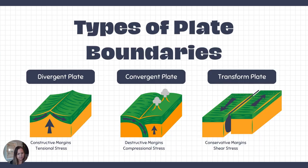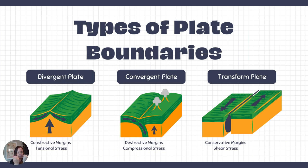There are three basic types of plate boundaries: divergent, convergent, and transform. At divergent plate boundaries, the plates are pulling apart. This drives construction of new material — as rocks move away from each other, mantle material fills in the void and we get new crust forming. So we call these constructive margins, and they are driven by tensional stress.